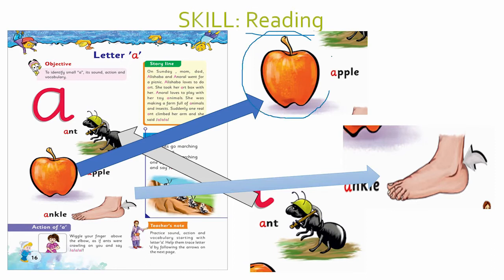Can you tell what is this? Can you tell what is this? This is an apple. This is an ant. This is an ankle.